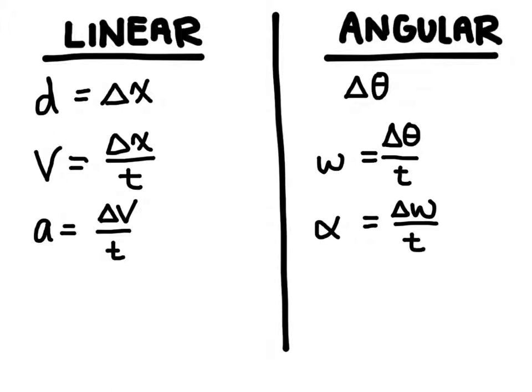Well, if you knew how quickly a bicycle wheel was spinning, its angular velocity, how quickly it was spinning here, you could determine how quickly the bicycle is traveling down the road, which is a linear velocity. You can convert from one to the other.